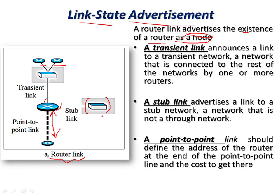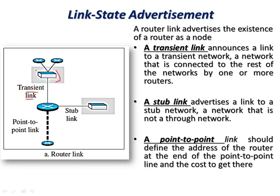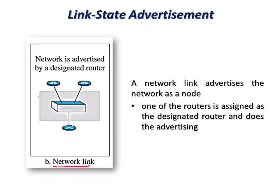The stub link handles communication to and from a network through the connected router only. The transient link applies when a network has several routers connected to it. These links define the addresses of routers to their neighbors. In a network link, the network is treated as a node. Since a network cannot advertise itself, one of the routers connected to it is designated as the designated router, which advertises information to other nodes.